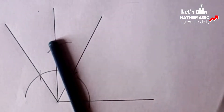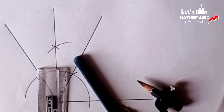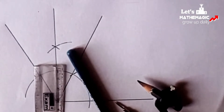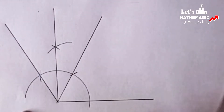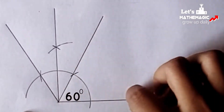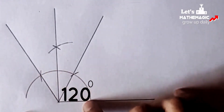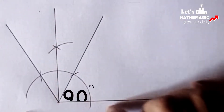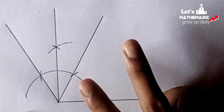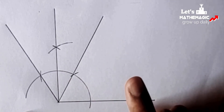Now we will learn how to bisect an angle. Using these three components — scale, pencil, and compass — we have already made three angles: the first one was 60 degrees, the second one was 120 degrees, and the last one we just made is 90 degrees.